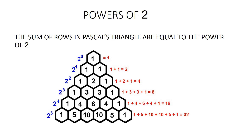That is, the sum of entries in the nth row is equal to 2^n, where n = 0, 1, 2, 3, etc. And hence, the sum forms the sequence 1, 2, 4, 8, and so on.